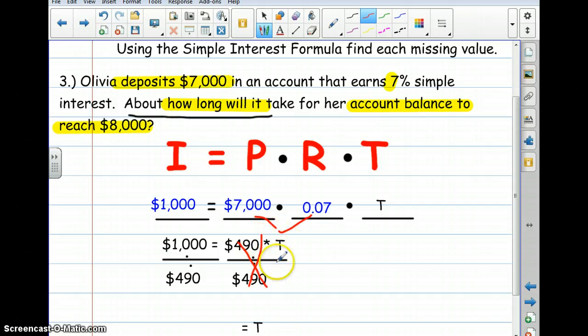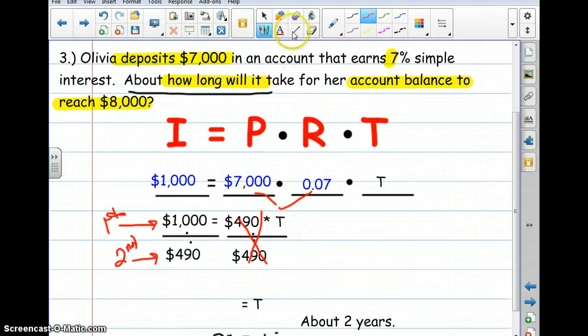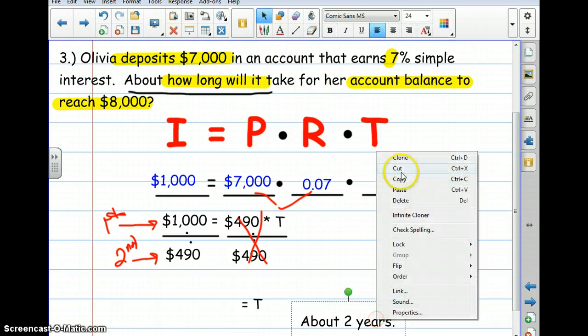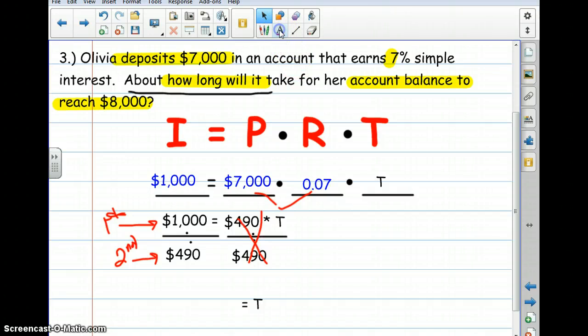I'll put 490 divided by both sides. 490 divided by itself cancels out into one, so we have just T left over. Now in your calculator, put the numerator in first and make sure you put the denominator in second. Go ahead and divide - 1,000 divided by 490.